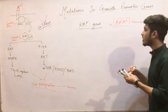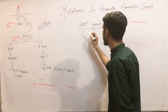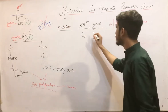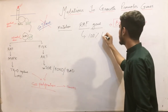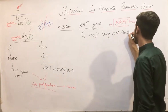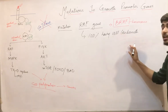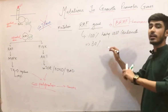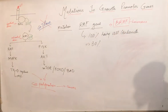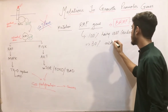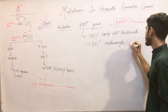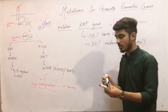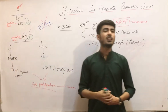RAF gene mutations are present in 100% of hairy cell leukemia and in 80% of benign tumours of the melanocytes.